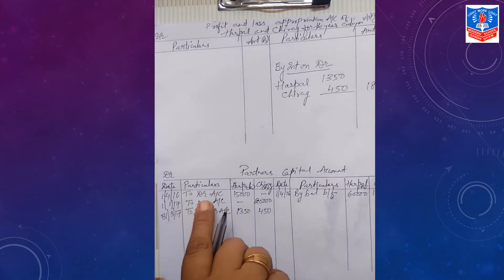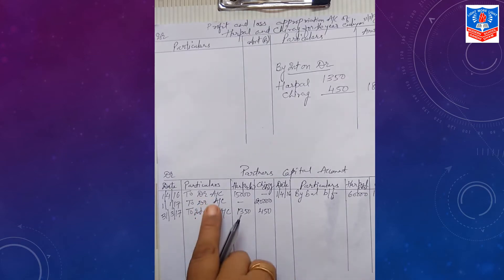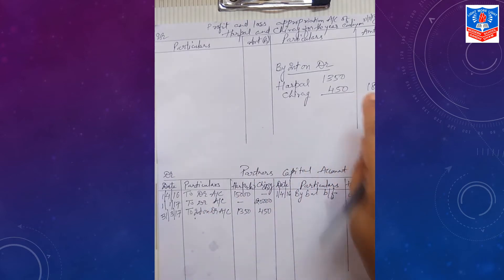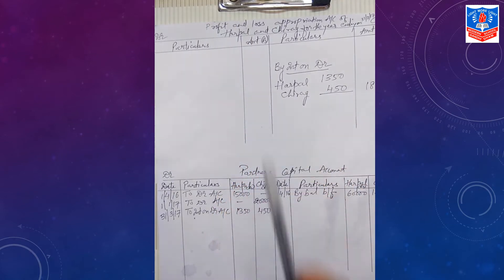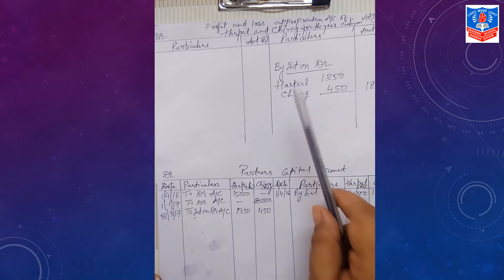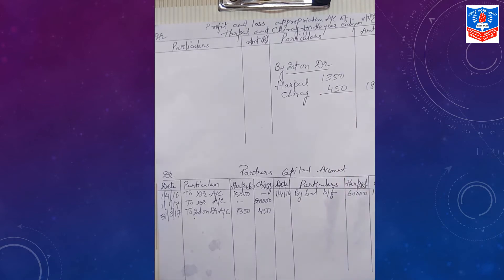Once again, try to understand everyone. Drawing is debited to partner's capital. Even interest on drawings is debited to partner's capital. Reverse, debited here, credited to appropriation. P&L appropriation account is prepared from the point of view of firm. Partner's capital account is prepared from the point of view of partner. So interest on drawings is expense for partner debited to his account, but at the same time it is income for the firm credited to P&L appropriation account.